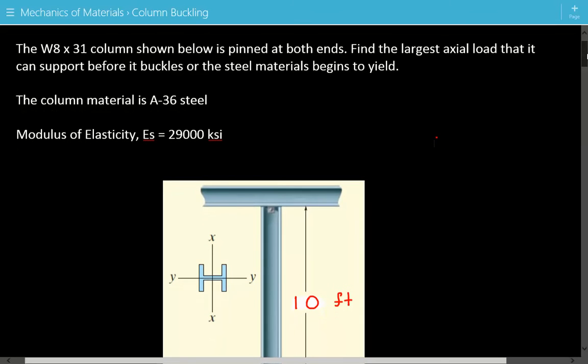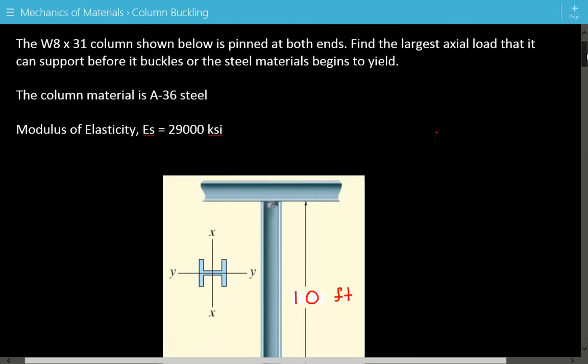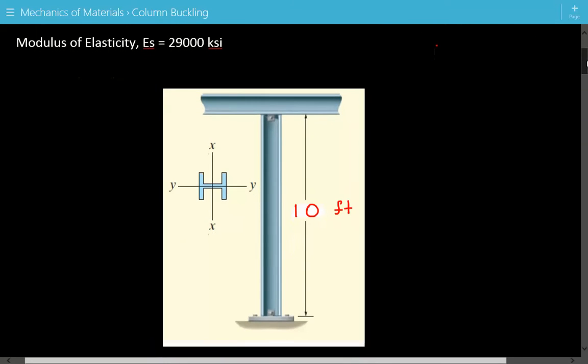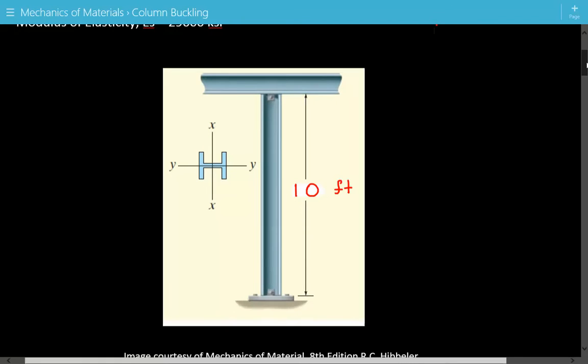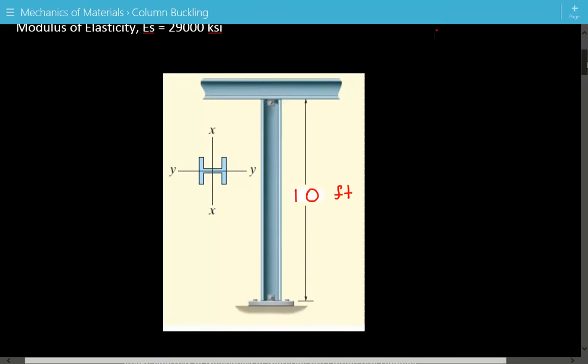The modulus of elasticity for steel is equal to 29,000 ksi. Here is our W8 by 31 column, pinned at the bottom and at the top. It's 10 feet long, and there's no other intermediate bracing in between, so the unbraced length about both axes is 10 feet.